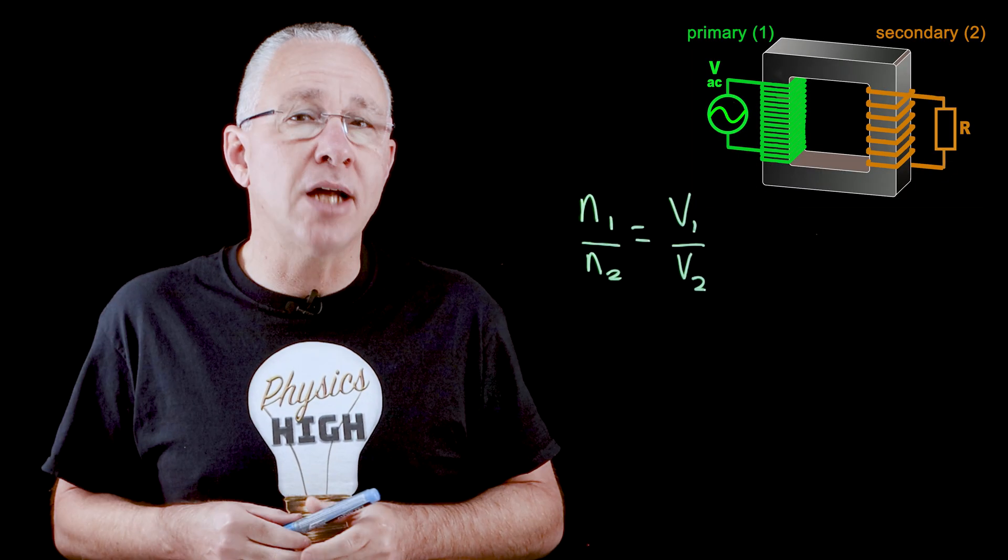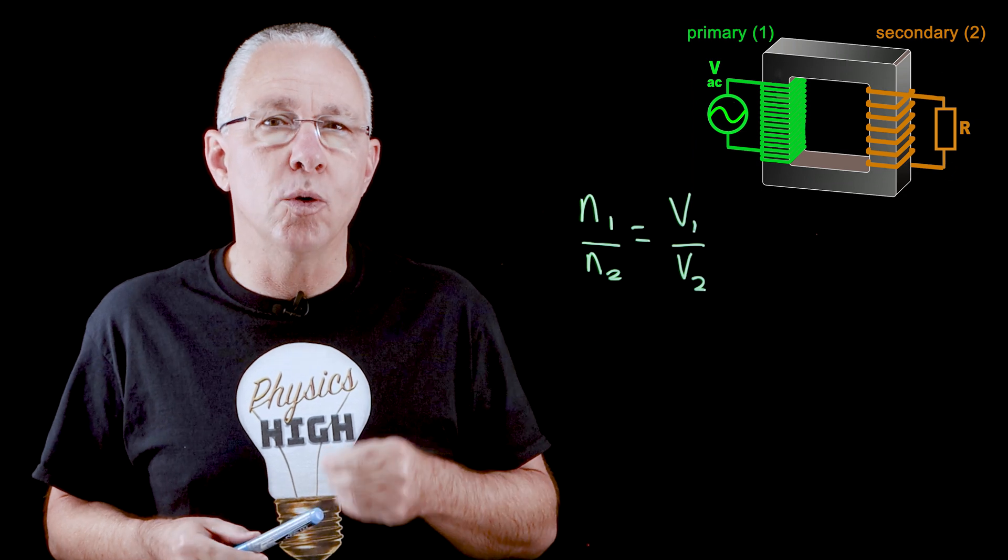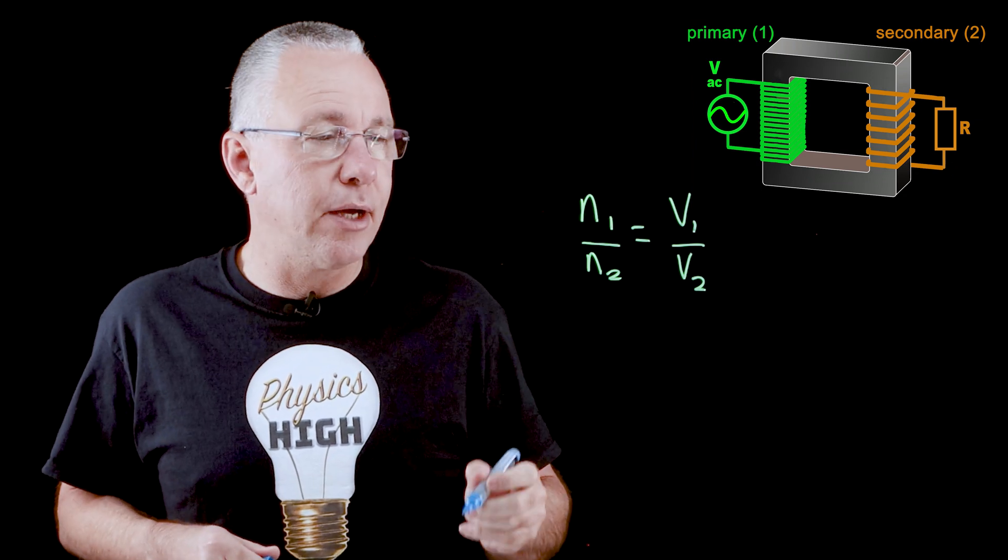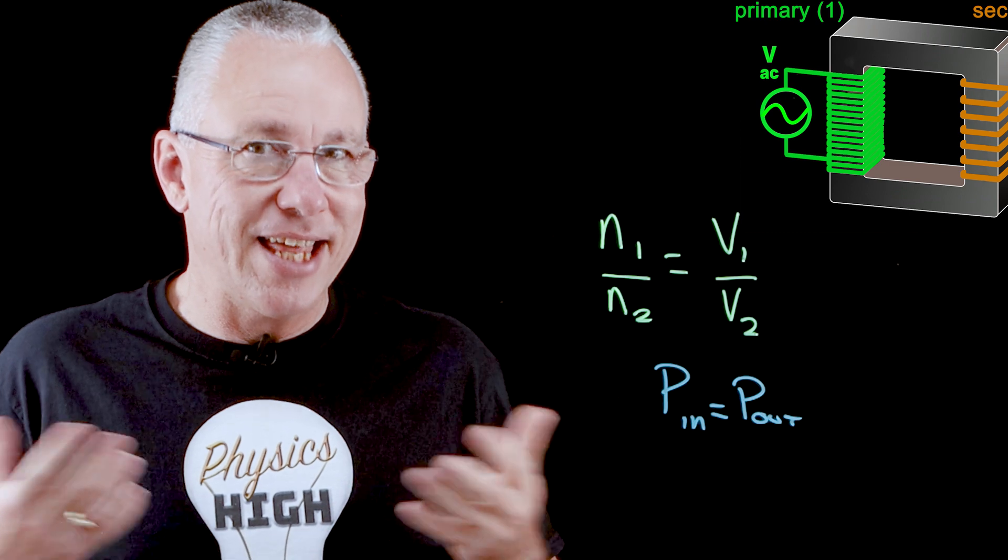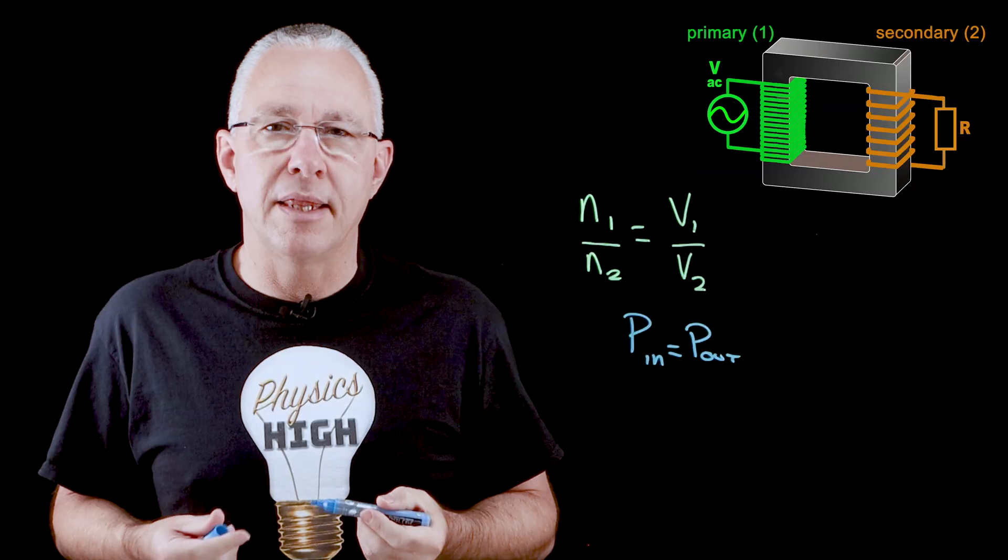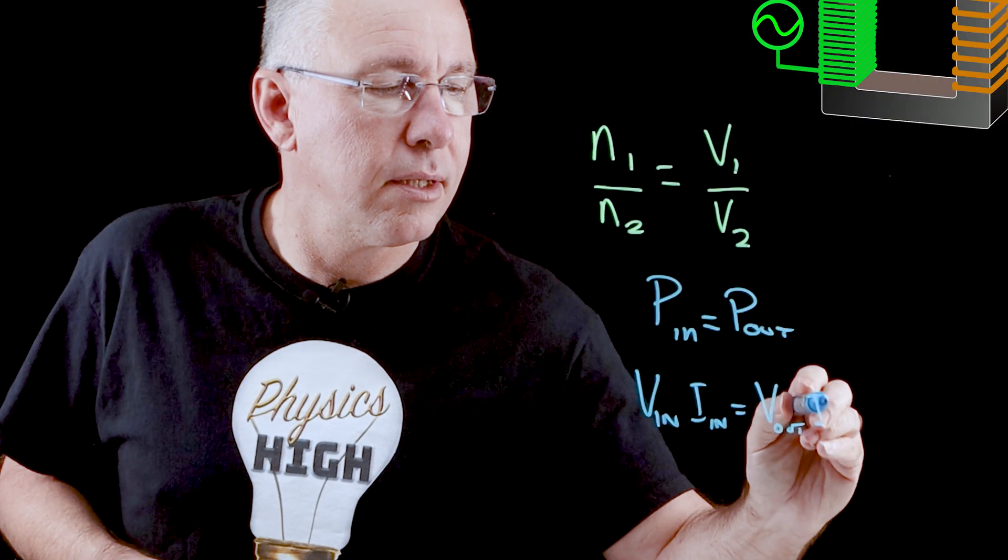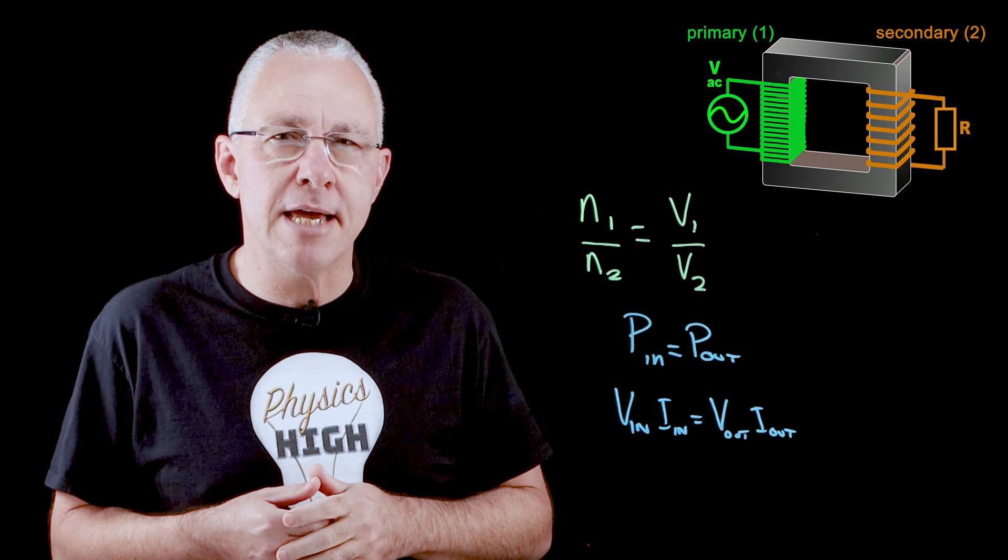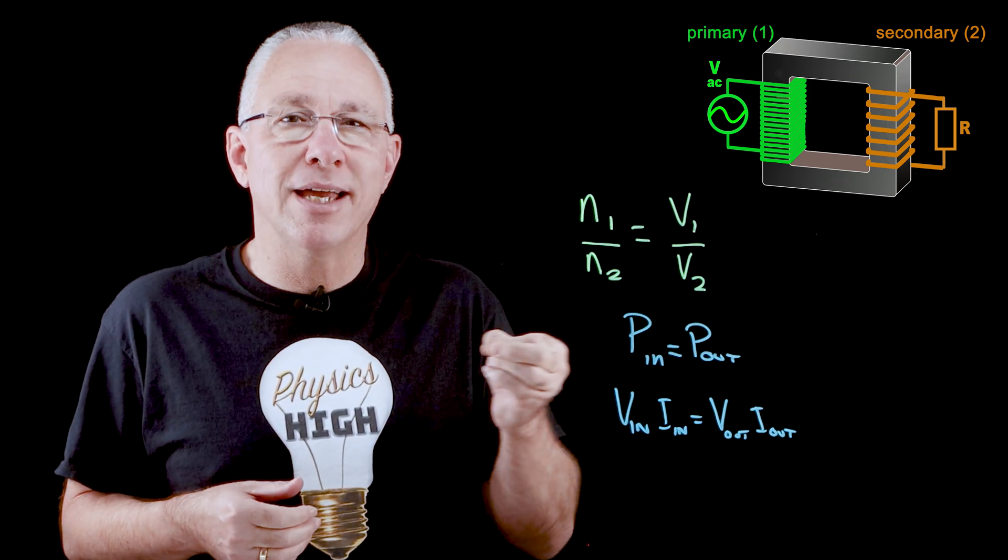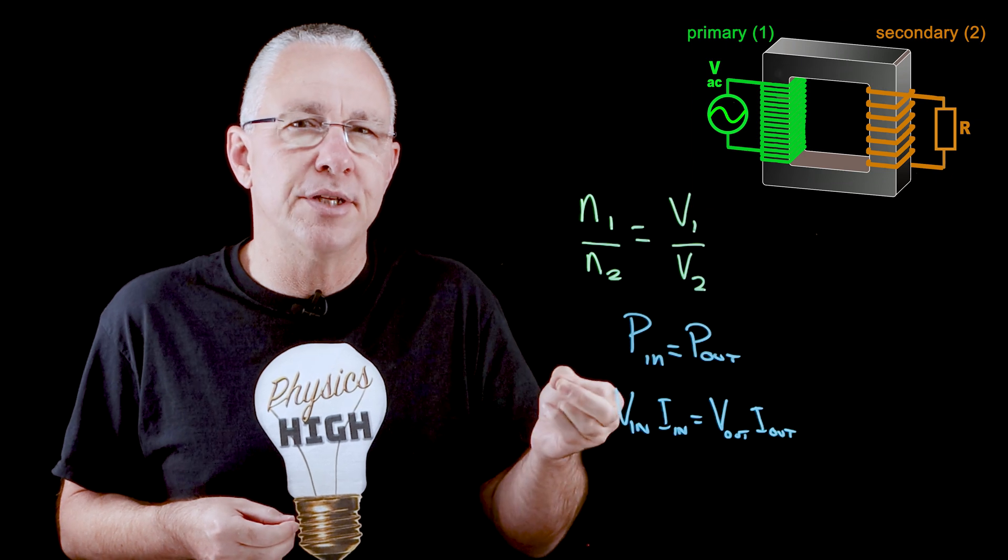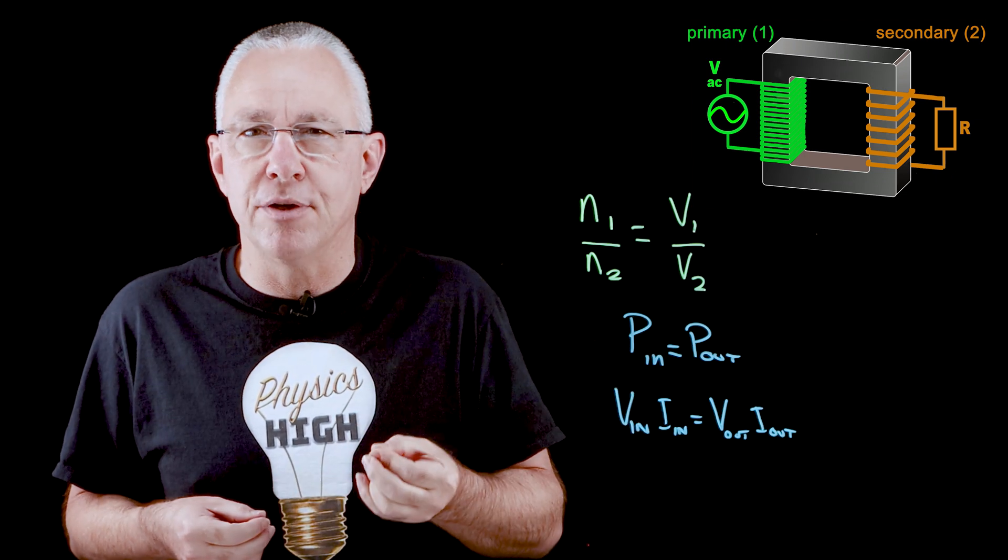But what about the current? In an ideal transformer, all the power going in equals the power going out. Now that's the conservation of energy for you. Now that means that because these two have to be the same, therefore the ratio of the currents is the inverse to the ratio of the numbers of turns and voltage.